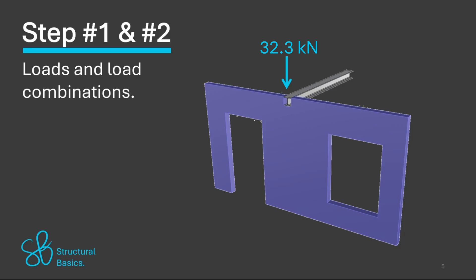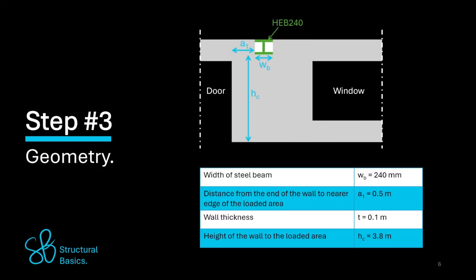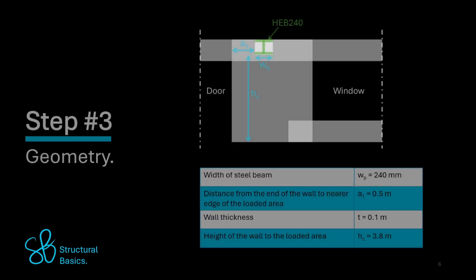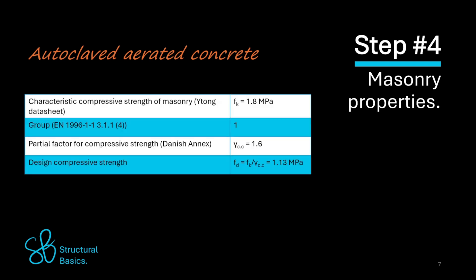We'll verify the masonry wall for a design point load of 32.3 kN. The wall and the beam have the following geometric properties. The material of the masonry wall is autoclaved aerated concrete which has these properties.